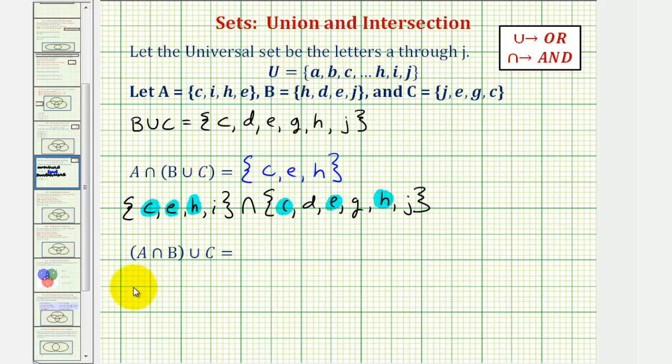So first we want to find A intersect B, which would contain the elements that are in set A and also in set B. So looking at set A and B, we're looking for the elements in common, which would be H and E.